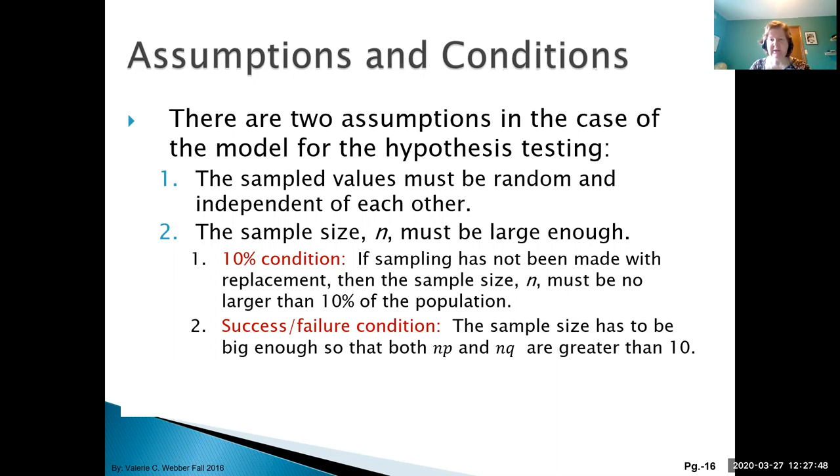For the sampling distribution, the sample values must be random and independent of each other. The sample size n must be large enough. This means we have a 10% condition - no more than 10% of our population. We also have the success-failure condition where np and nq must be greater than 10.